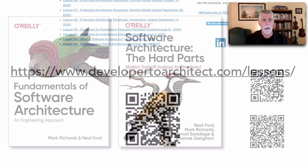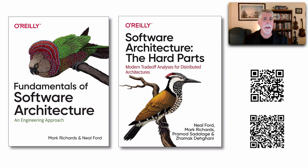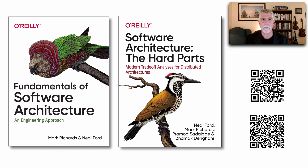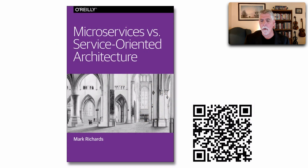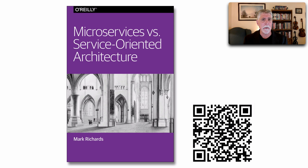Most of my lessons in Software Architecture Monday are based on two books I've recently written with my friend Neil Ford: The Fundamentals of Software Architecture, and also now released in paper, print, and ebook, Software Architecture: The Hard Parts. I also want to offer another reference — a book I wrote a couple years ago, Microservices vs. Service Oriented Architecture, a good reference to really see the differences between these two architectural styles.